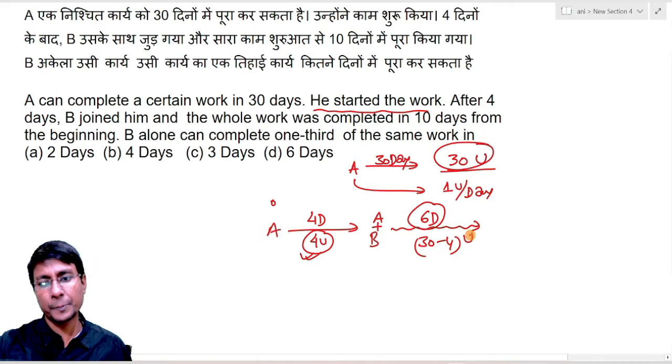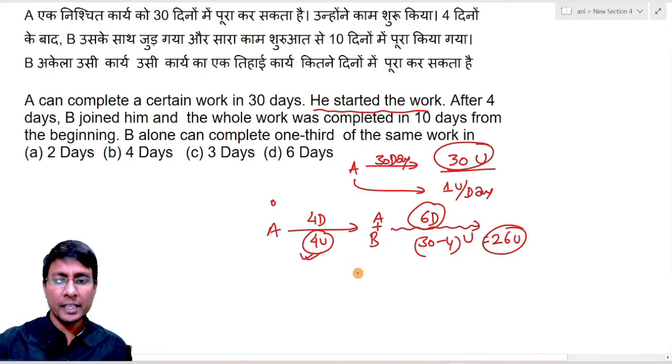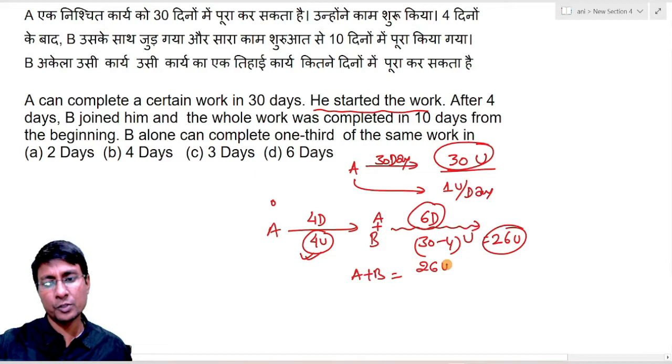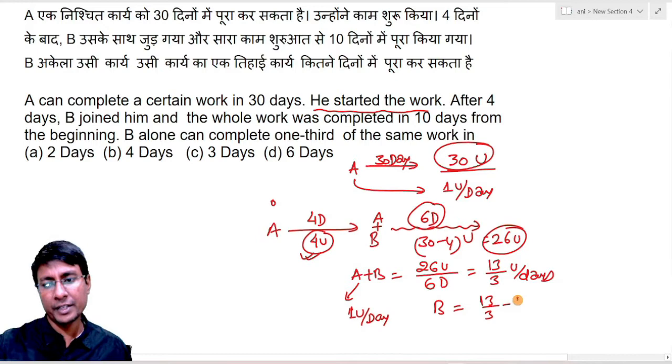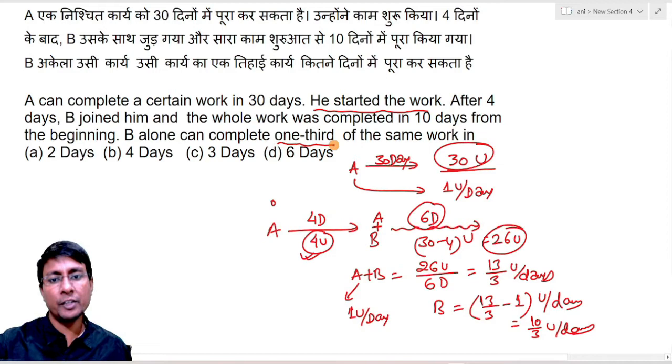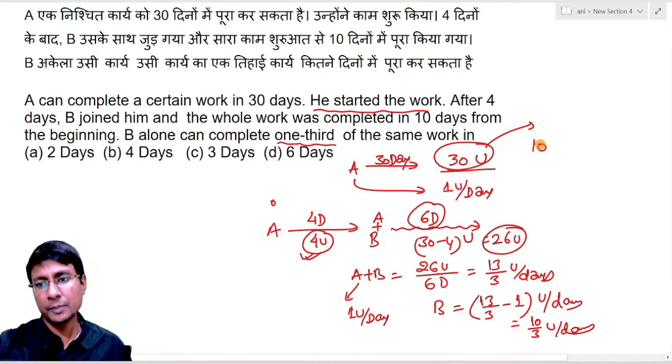So here A plus B's combined efficiency equals 26 units divided by 6, which equals 13/3 units per day. We have to find B alone doing one-third of the work. So total is 30 units, one-third of the work is simply 10 units.